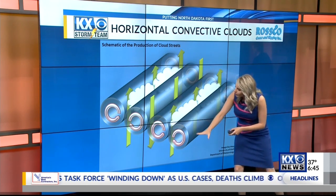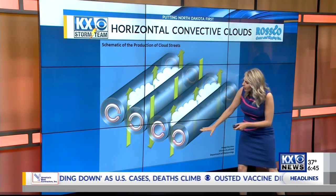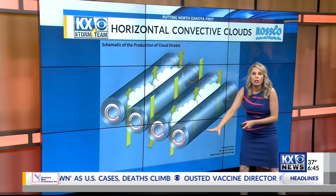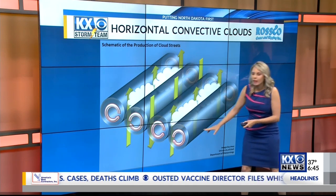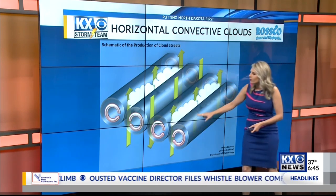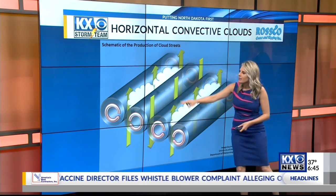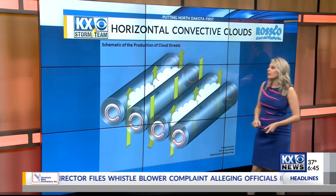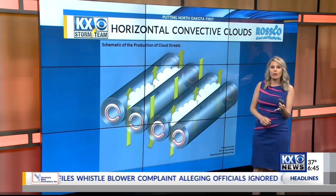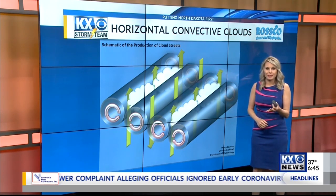The wind at the surface underneath these clouds is actually flowing parallel to the clouds, and then we have these eddies up in the sky creating these long cloud streets.